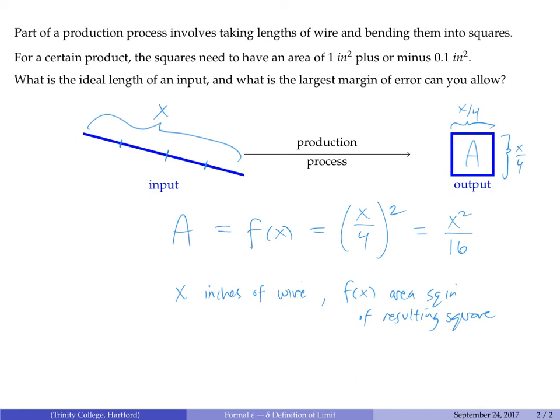If you realize what's going on, we're asking: if I need my function values to be within a certain margin of error, like 1 ± 0.1, which function values produce those areas? Which lengths of wire are acceptable?